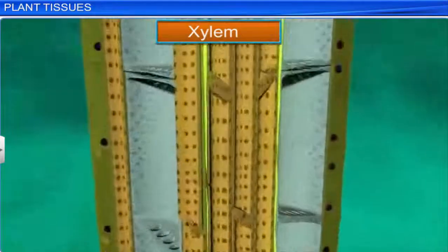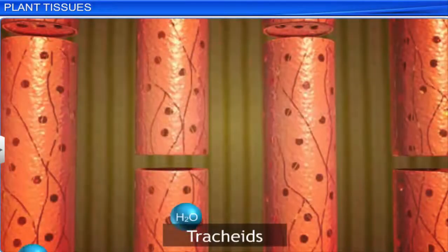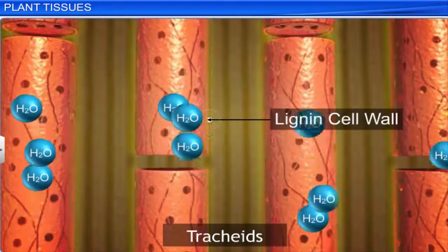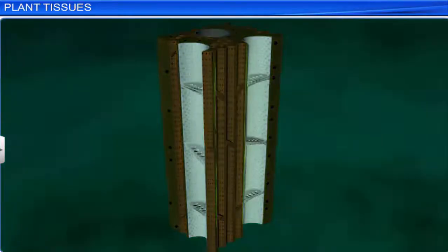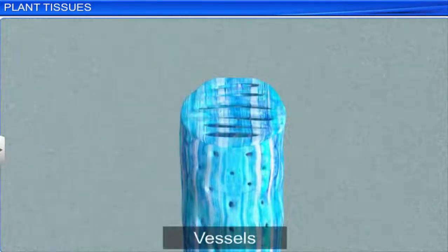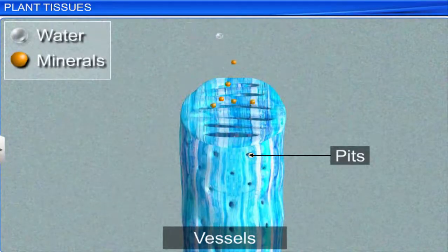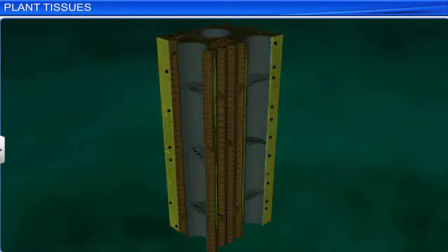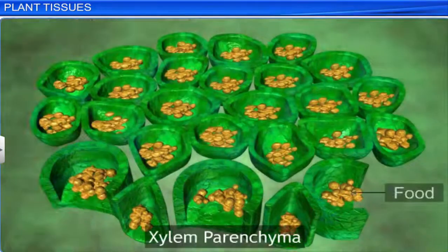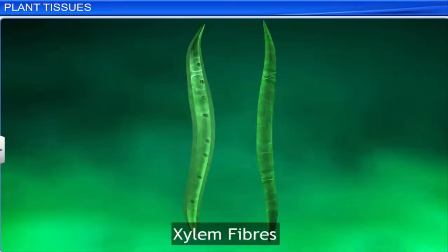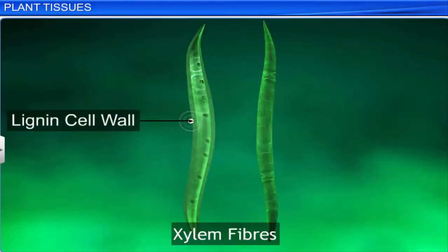Tracheids are tubular dead cells that transport water. Their cell wall is made of lignin, which provides mechanical support. Vessels are elongated dead cells with pits that transport water and minerals; they are usually present in big trees. Xylem parenchyma cells are living and store food. Xylem fibers are elongated dead cells with lignin that provide mechanical support.